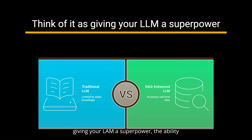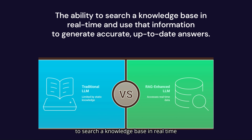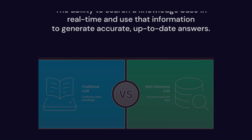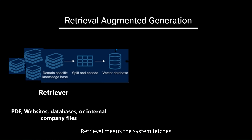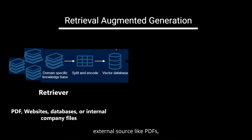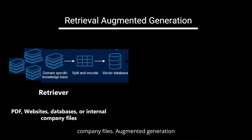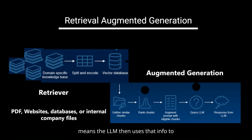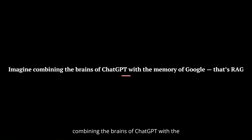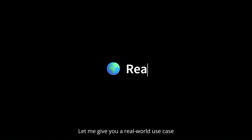Think of RAG as giving your LLM a superpower — the ability to search a knowledge base in real time and use that information to generate accurate, up-to-date answers. Retrieval means the system fetches relevant documents or data from an external source like PDFs, websites, databases, or internal company files. Augmented generation means the LLM then uses that info to generate a response grounded in real facts. Imagine combining the brains of ChatGPT with the memory of Google.